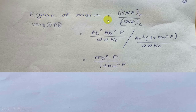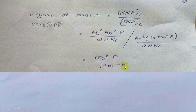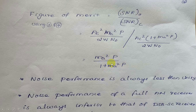The figure of merit is the ratio of the output SNR to the channel SNR. Using equations 3 and 4 and simplifying, the figure of merit equals MA² × P / (1 + MA² × P). For the double sideband full carrier AM system, the figure of merit is always less than unity. This means the noise performance of the full AM receiver is always inferior to that of the double sideband suppressed carrier receiver, due to the wastage of transmitter power from transmitting the carrier.